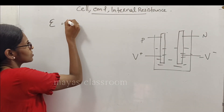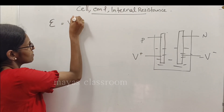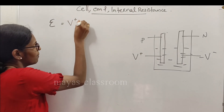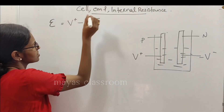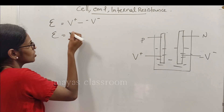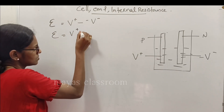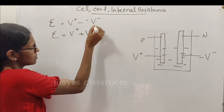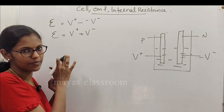We express EMF as the positive potential V plus minus V minus. So EMF is equal to V plus minus V minus.